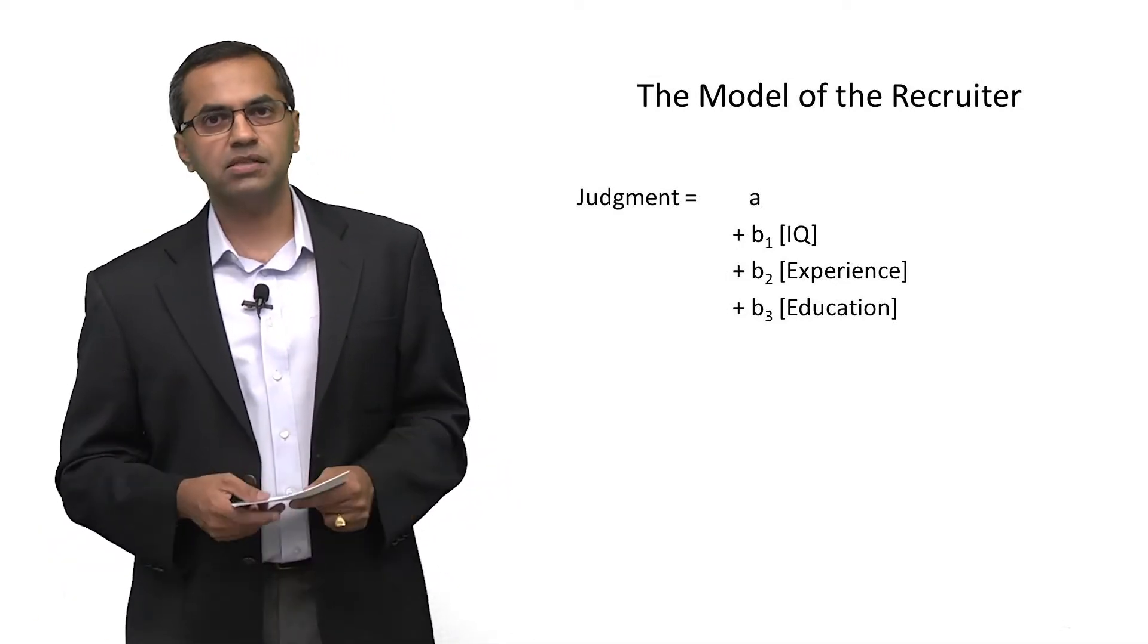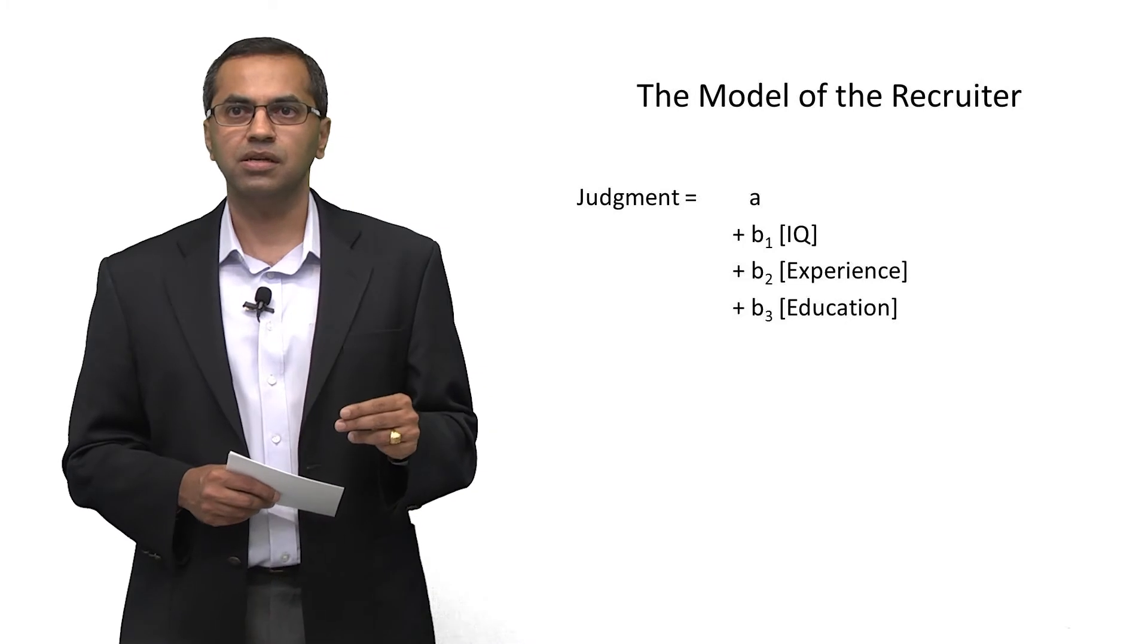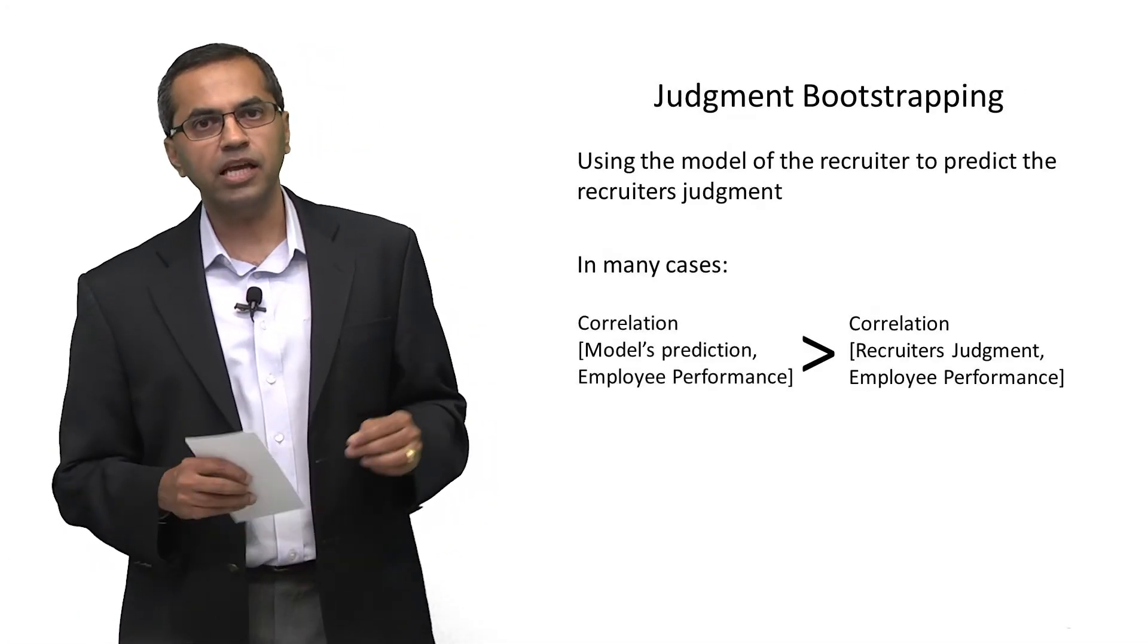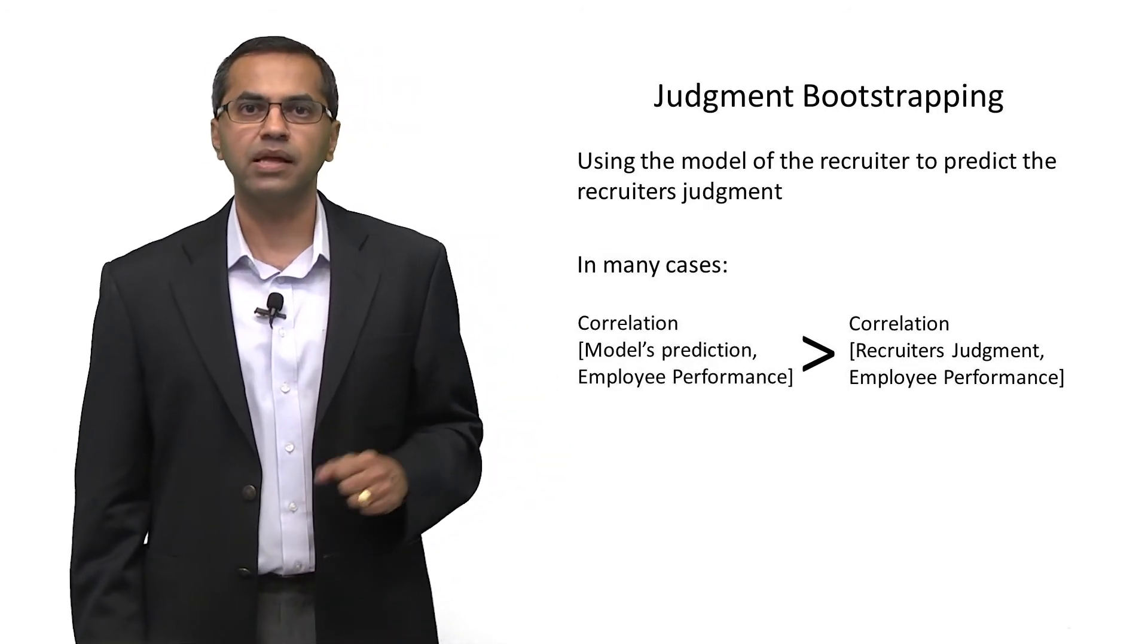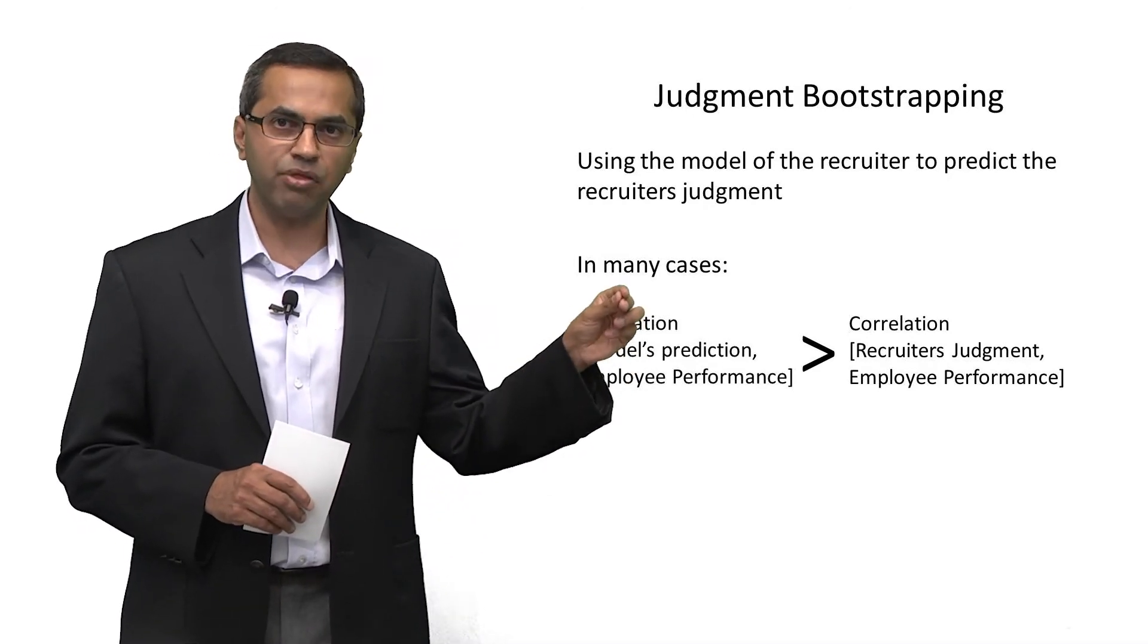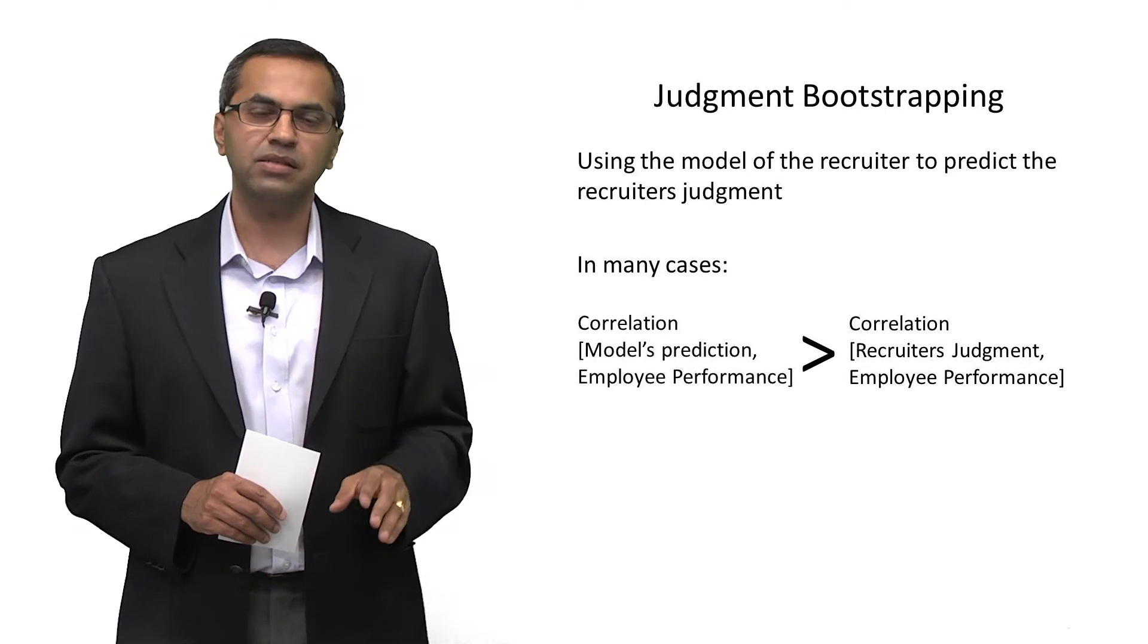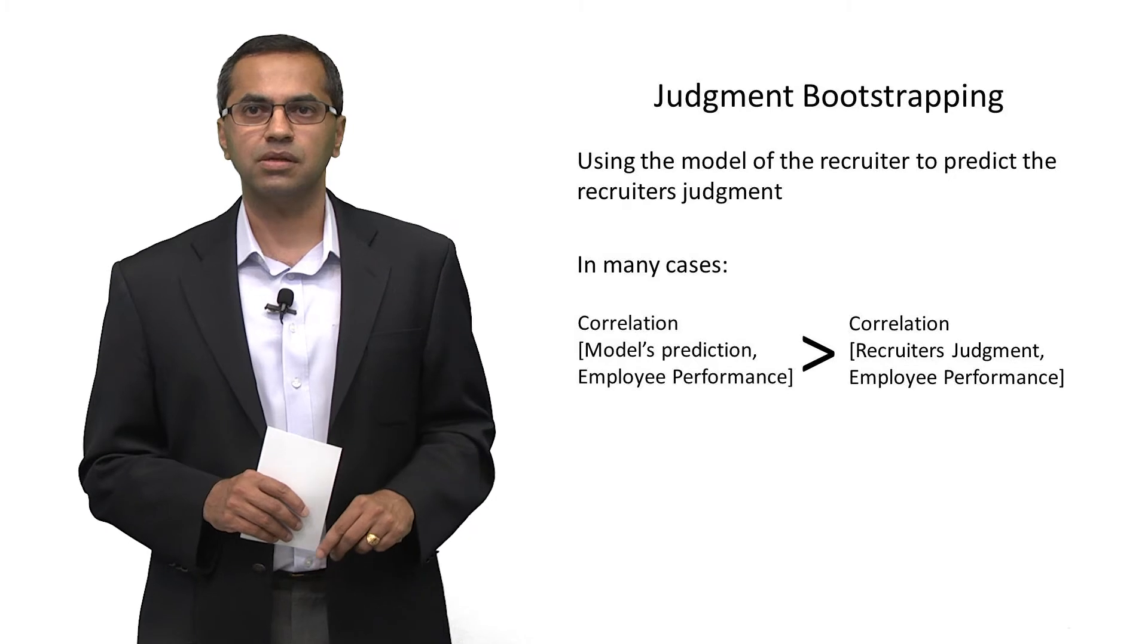There were a number of studies done in the 70s and 80s that looked at the idea of using a model of the judge to see if in fact it did better than or worse than the judge themselves. And here's what the research found. If you did a correlation between the model's prediction of what you would have predicted and the truth, assuming of course now you had the truth, it turns out that that correlation is better than, in many cases, the correlation between the judge's prediction and the truth. That simply means that the model is a better predictor of the final outcome than the judge is.